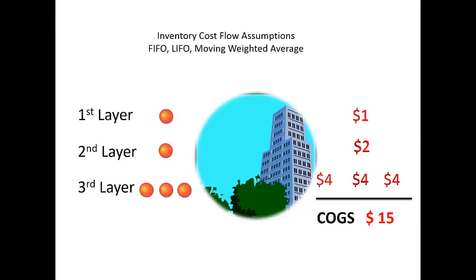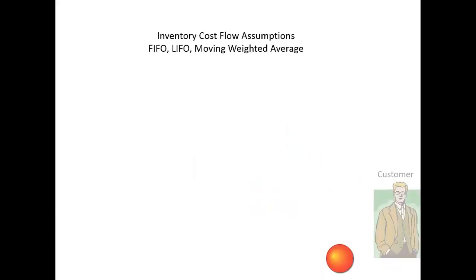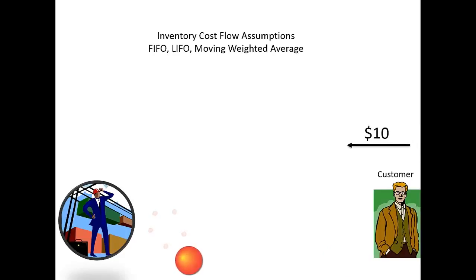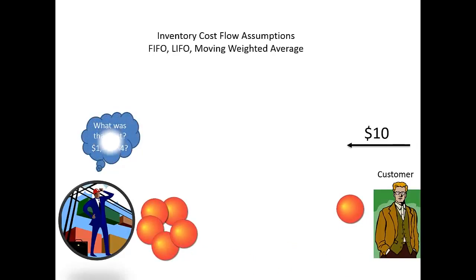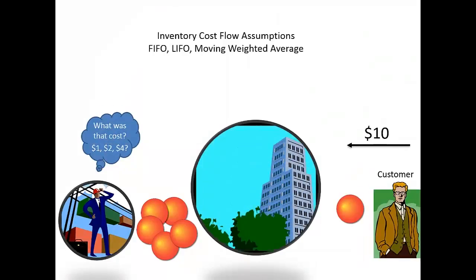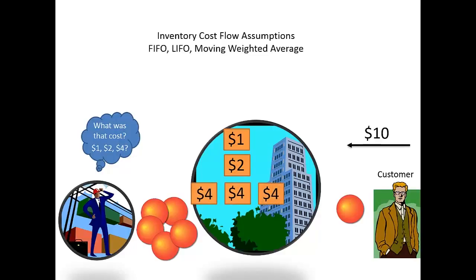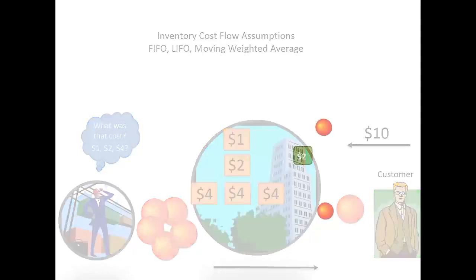Now imagine that a customer paid $10 to purchase one of the five gumballs, but management has no idea specifically which gumball the customer bought. Was the cost of the gumball $1, $2, or $4? Because management doesn't know which gumball was sold, it will simply assume which unit cost was sold.